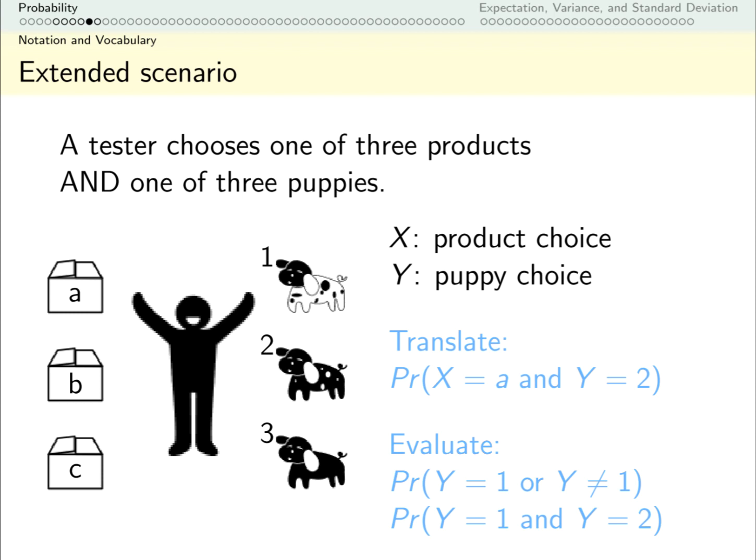The first expression, PR, means probability. X is choosing a product. We want the probability that the tester chooses product A. Y is the puppy. We also want the probability that both of these things happen. That someone chooses both box A and puppy 2.